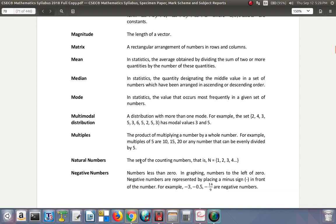Natural numbers: the set of counting numbers, that is N is 1, 2, 3, 4, and so on.